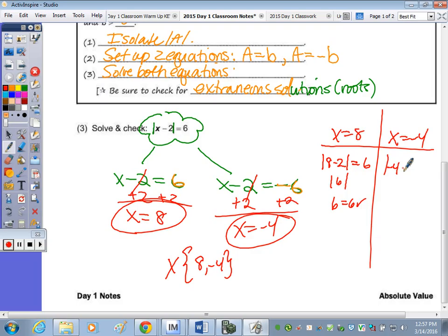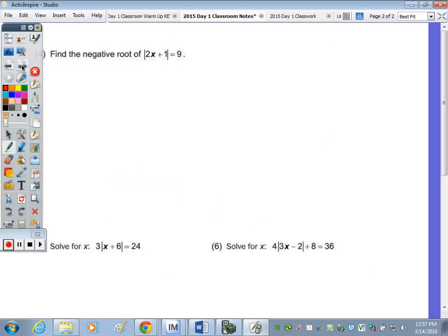What about negative four minus two, the absolute value of that? Is that equal to six? You've got to do the operation first. So order of operations. So it's to simplify what's in your operation symbol. So the absolute value of negative six is six, and that checks out. All right, if we look at number four, find the negative root.